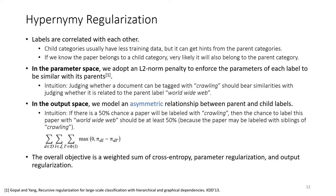And in output space, we model an asymmetric relationship between parent and child labels. The intuition here is that if there is a 50% chance a paper will be labeled with 'crawling,' then the chance to label this paper with 'World Wide Web' should be at least 50%, because the paper may be labeled with siblings of crawling. So the final objective is a weighted sum of cross-entropy, parameter regularization, and output regularization.